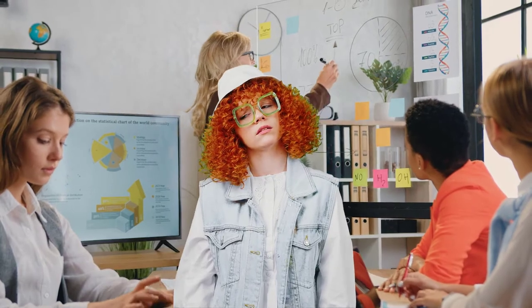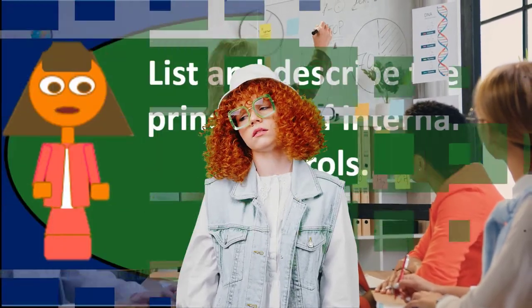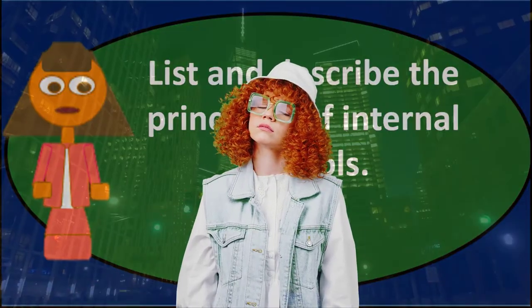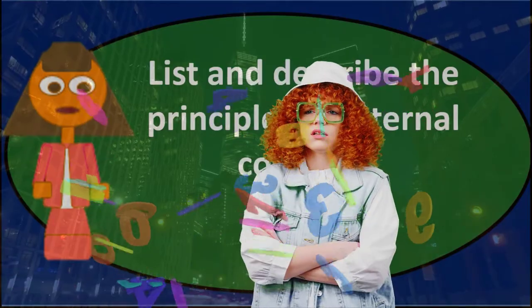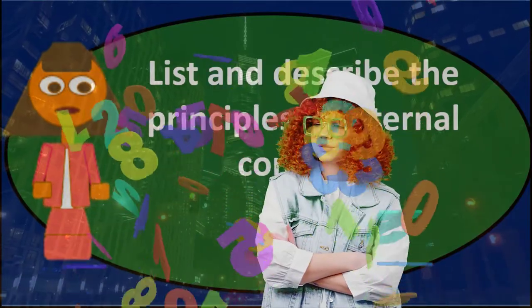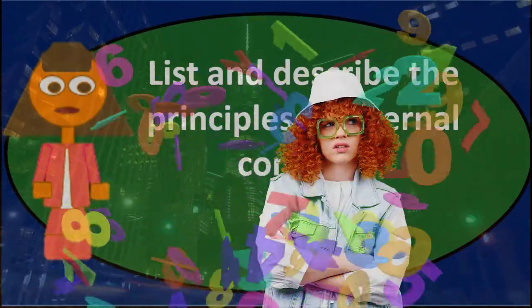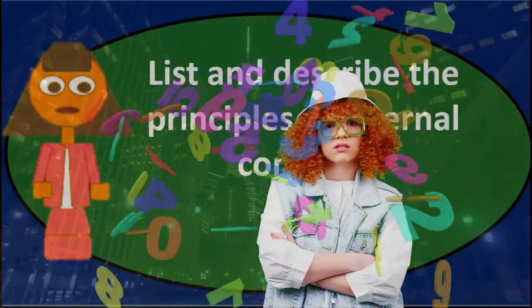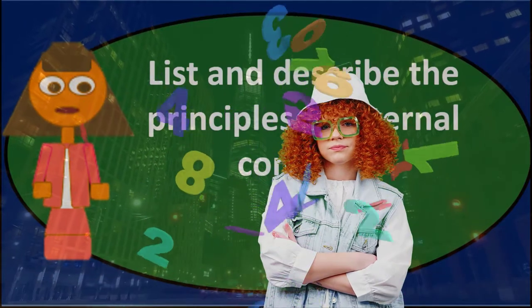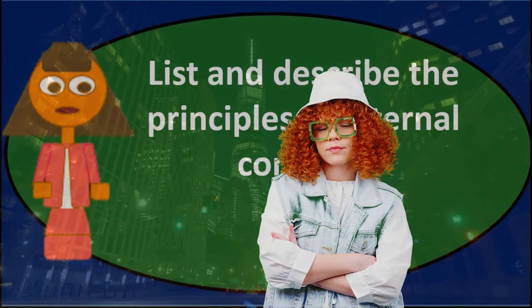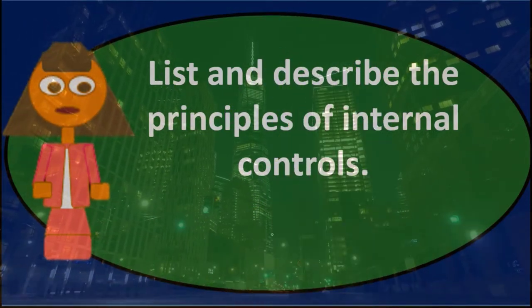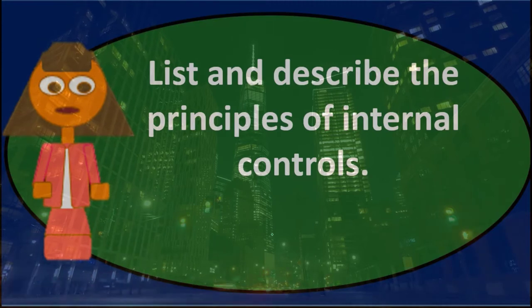We can talk first about what those objectives are in terms of internal controls, and then go over the types of principles that we're going to put in place in order to achieve those objectives. The idea of internal control seems pretty simple at first glance, but it can get very complicated very quickly as we start to look through different techniques and list out the principles we're going to use in order to get to the ultimate goals.